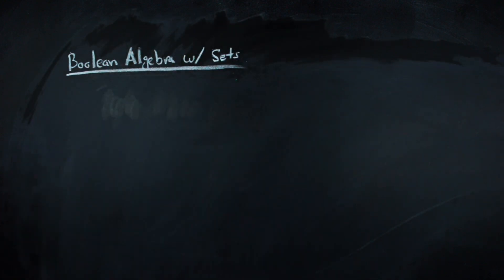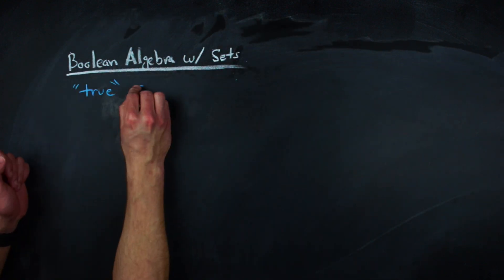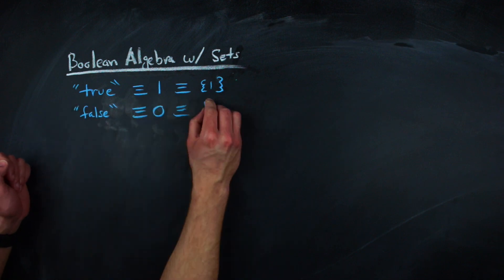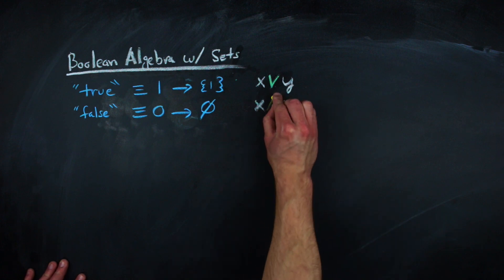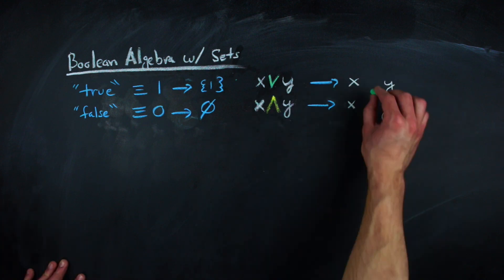Instead of saying that true is one and false is zero, we can instead say that true is the set containing one, and false is just the empty set. From this framework, disjunctions become unions, and conjunctions become intersections.